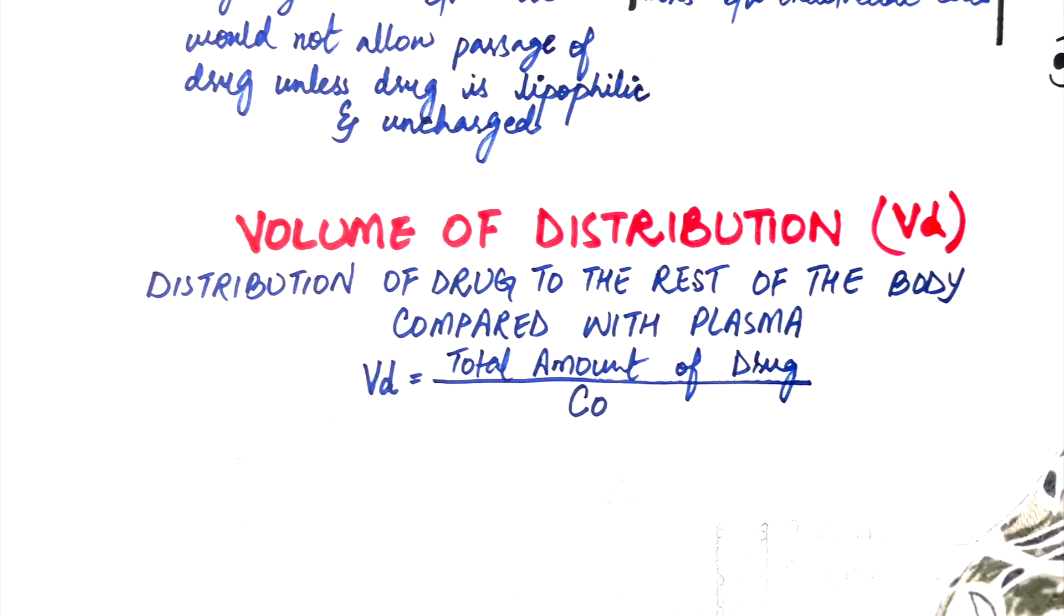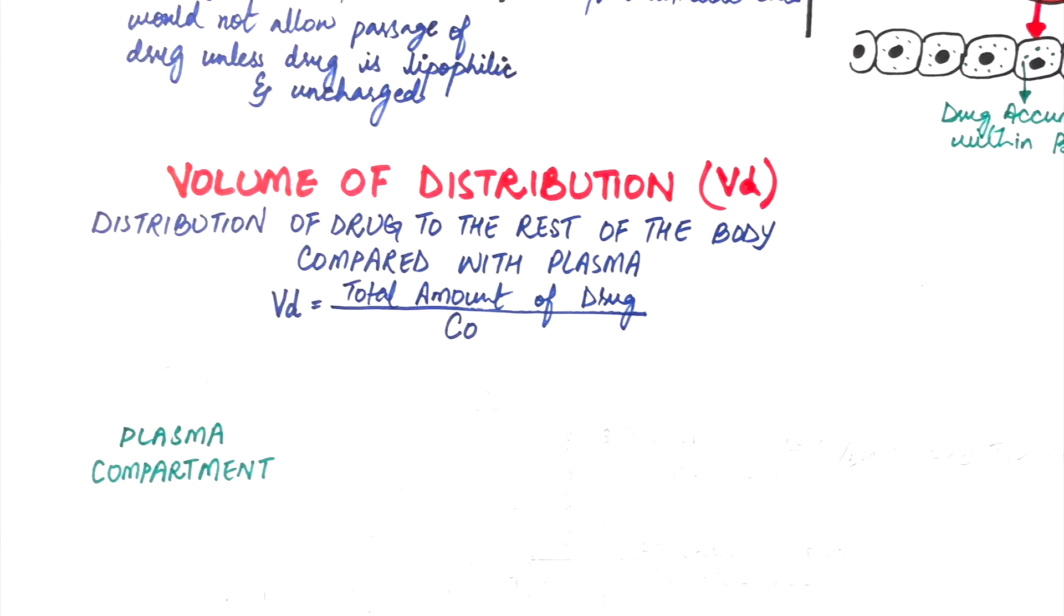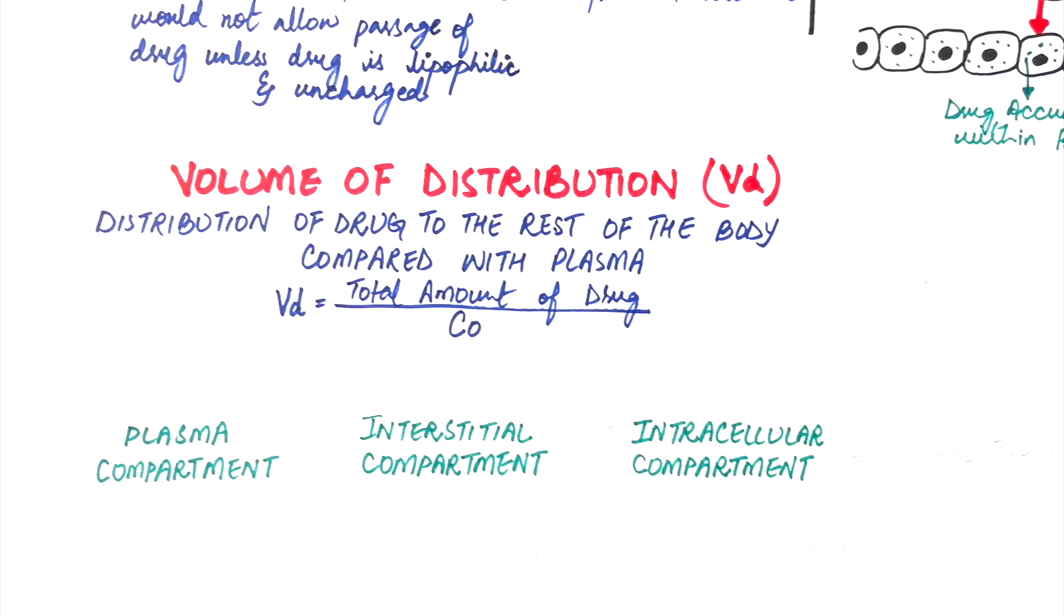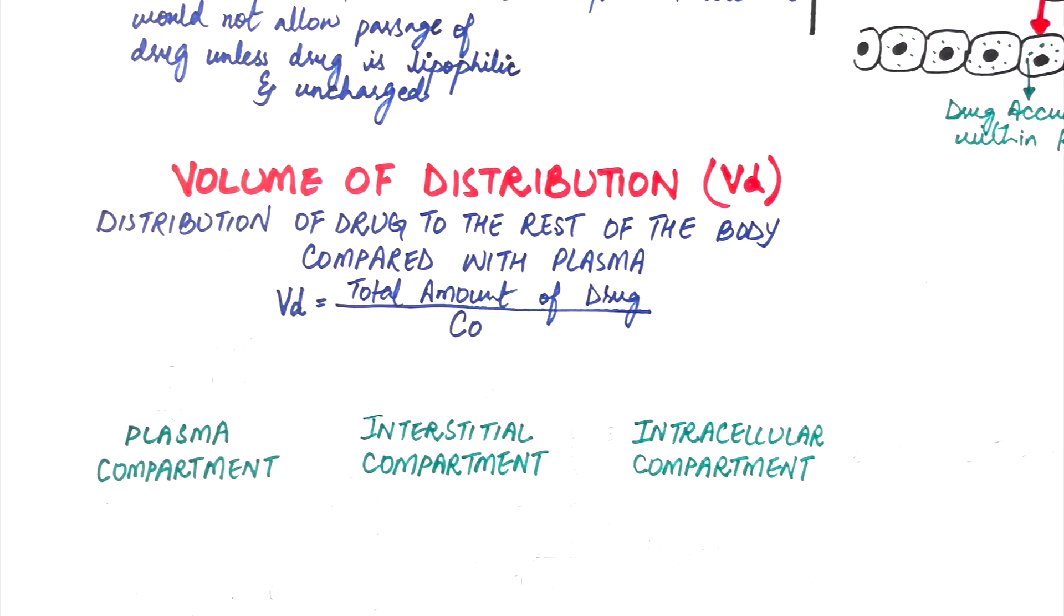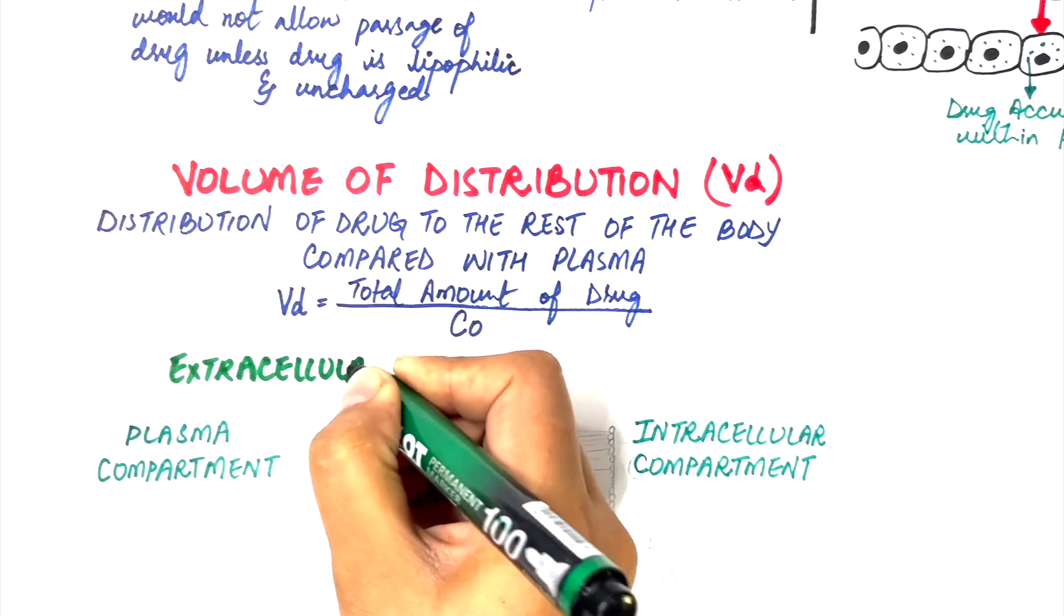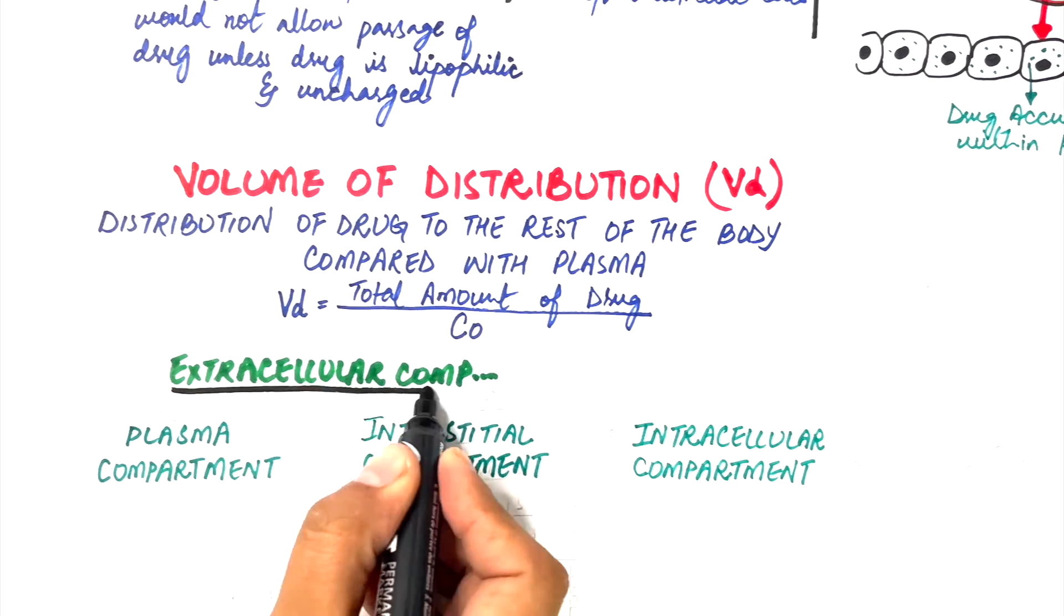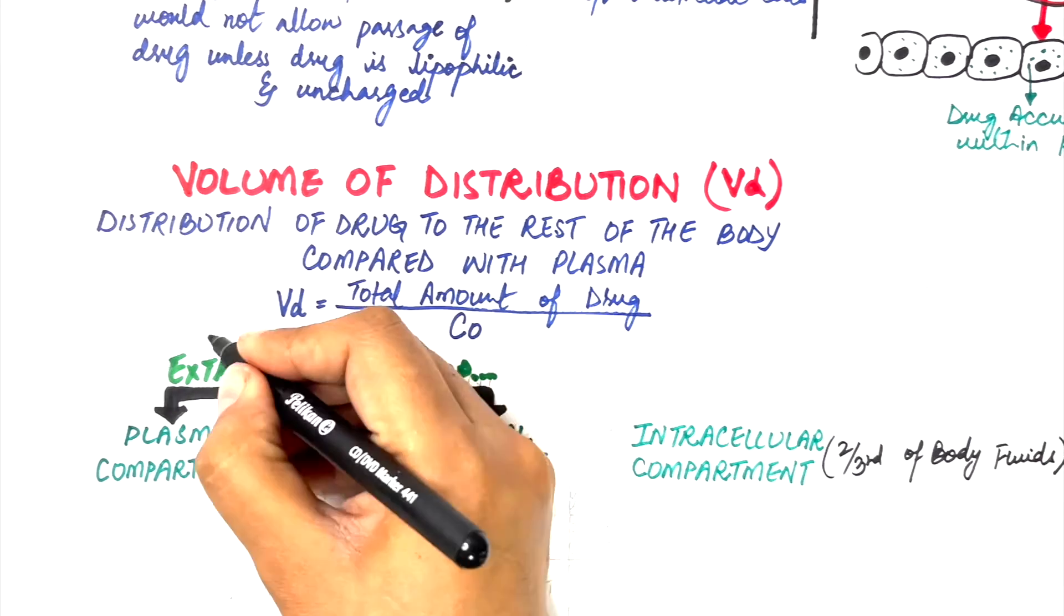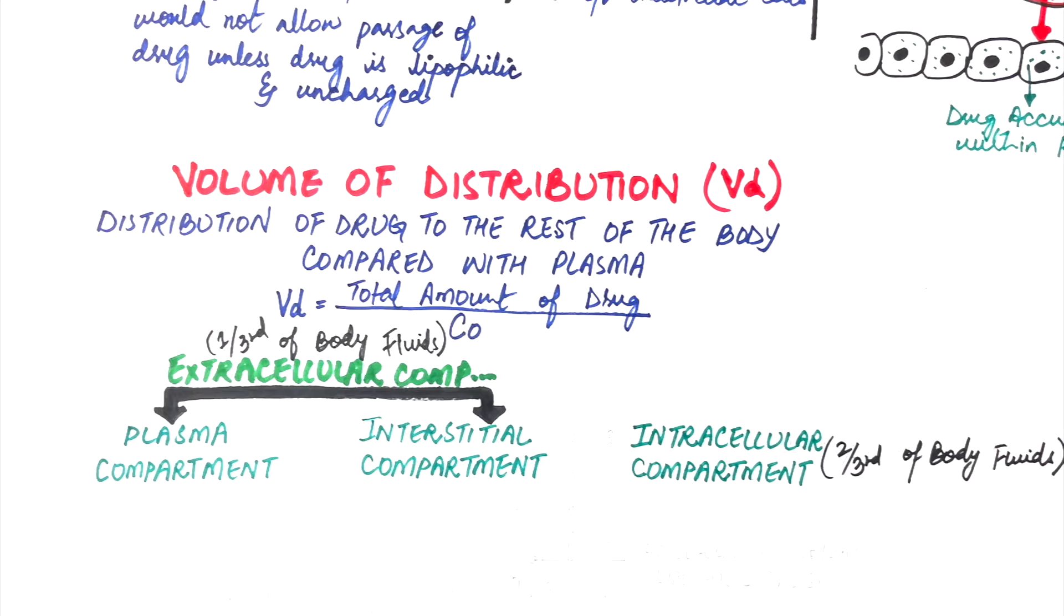To understand the drug distribution, it's really important to have some knowledge of the body compartments first. There are three major fluid compartments in the body listed as the intravascular or the plasma compartment, the interstitial compartment and the intracellular compartment. The intravascular and the interstitial compartments together are considered the extracellular compartment. The intracellular compartment makes two-thirds of the body fluids, while together the intravascular and interstitial compartment, which makes the extracellular compartment, makes one-third of the body fluids. The total body water is the sum of the extracellular and the intracellular water compartments, which is about 0.4 liter per kg or 60% of the total body weight.